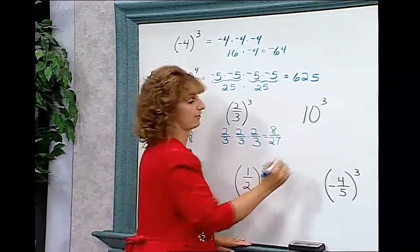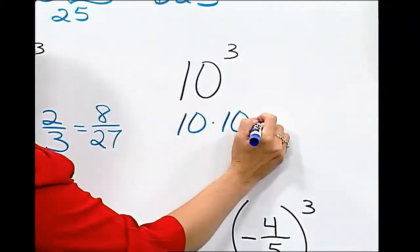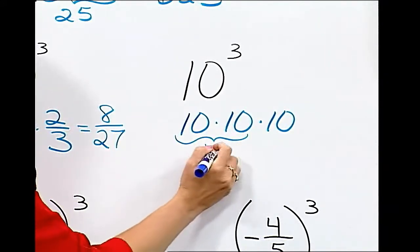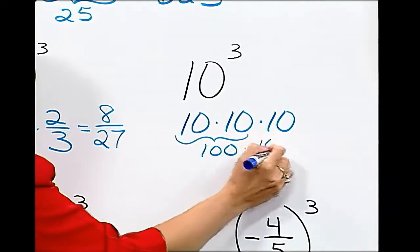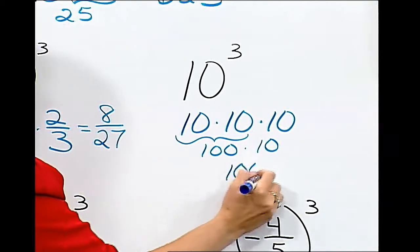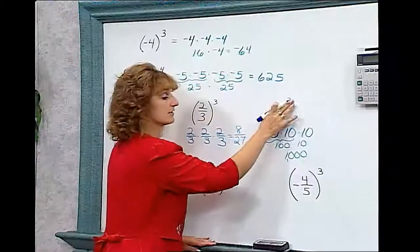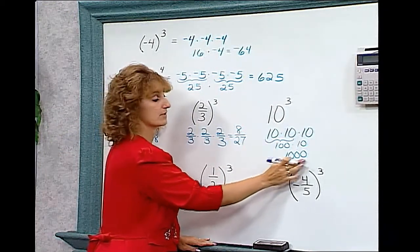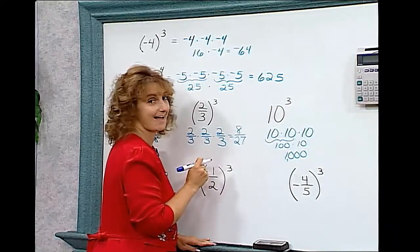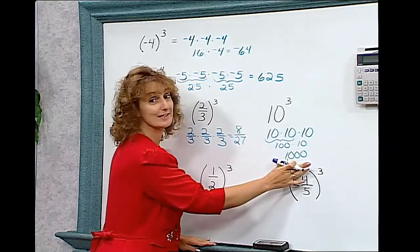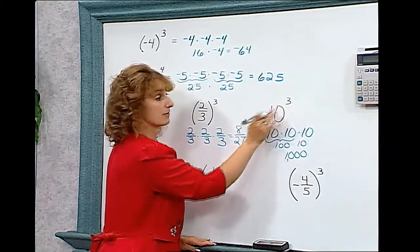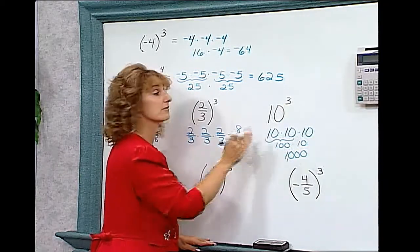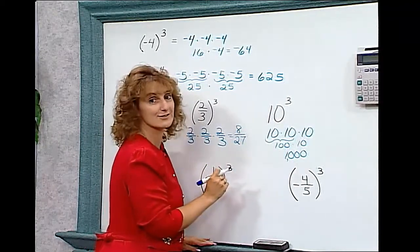10 to the third is 10 times 10 times 10. 10 times 10 is 100, times another 10 gives me 1,000. So 10 to the third is 1,000. Is it a coincidence that we have three zeros with an exponent of 3? I think not. You will see that with powers of 10, this will always happen. So 10 to the fourth would have four zeros, 10 to the fifth would have five zeros, and so on.